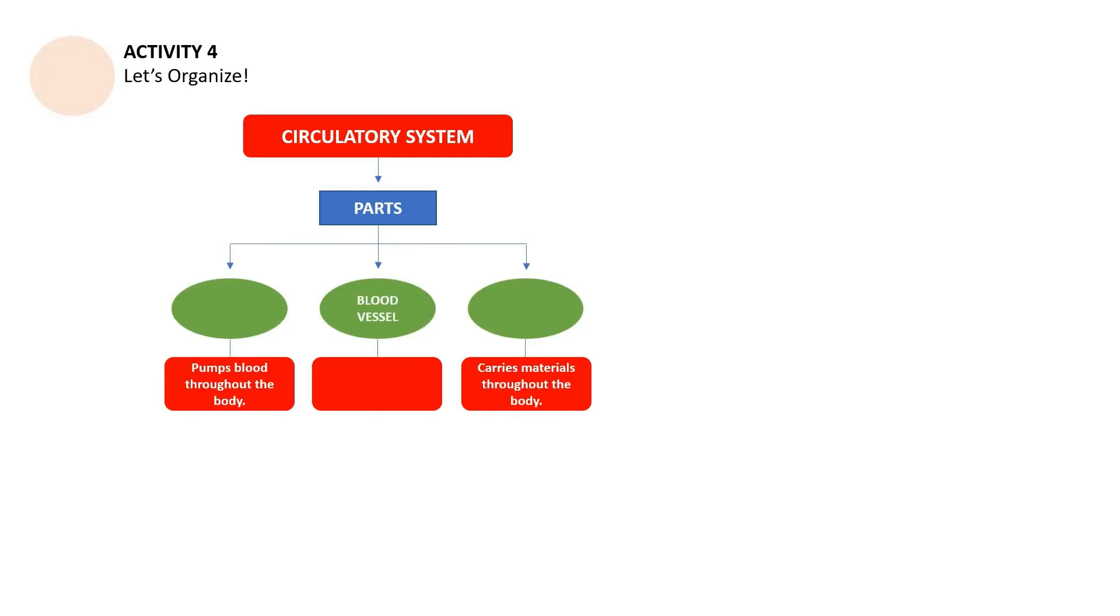I'll be showing this to you part by part. We have here the circulatory system. Name its parts. How many parts do we have? There are three. One part pumps blood throughout the body. So which part is that? And then the blood vessels, what should we put in this box? Since these two look like descriptions or functions, what do you put here? Just have to figure that out. The last part carries materials throughout the body. In the case of blood vessels, what are the three types of blood vessels? Write them down. If I am being fast, you can just pause it.